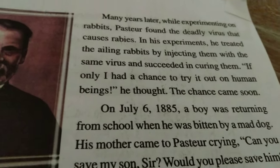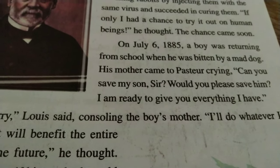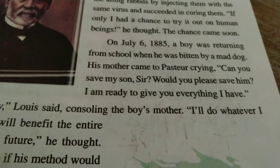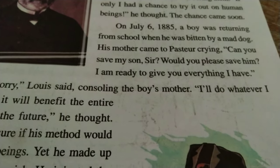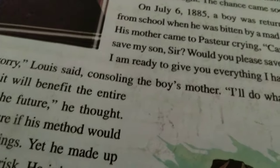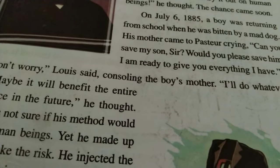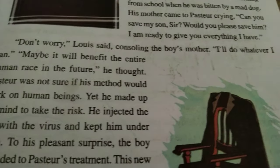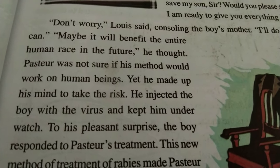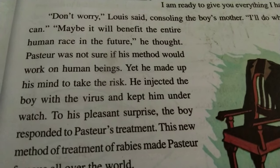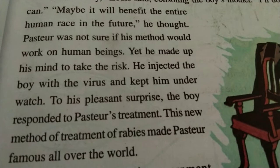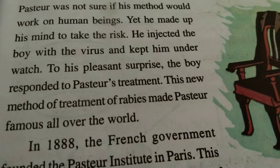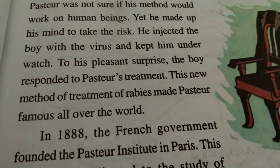Soon, on July 6, 1885, a boy was returning from school when he was bitten by a mad dog. His mother came to Pasteur: 'Can you save my son? I am ready to give you everything I have.' Pasteur said consoling the boy's mother, 'Don't worry, I will do whatever I can. Maybe it will benefit the entire human race in the future.' Pasteur was not sure if his method would work on human beings, yet he made up his mind to take the risk. He injected the boy with the virus, and to his pleasant surprise, the boy responded to Pasteur's treatment.